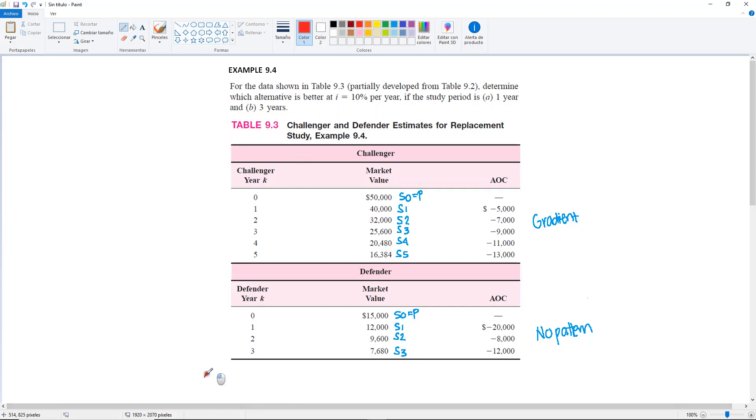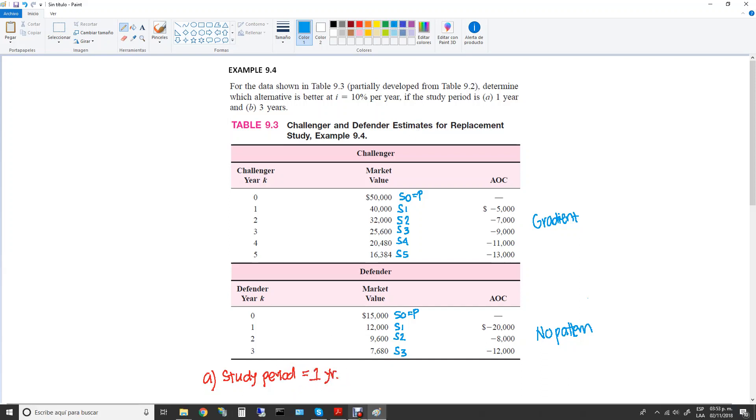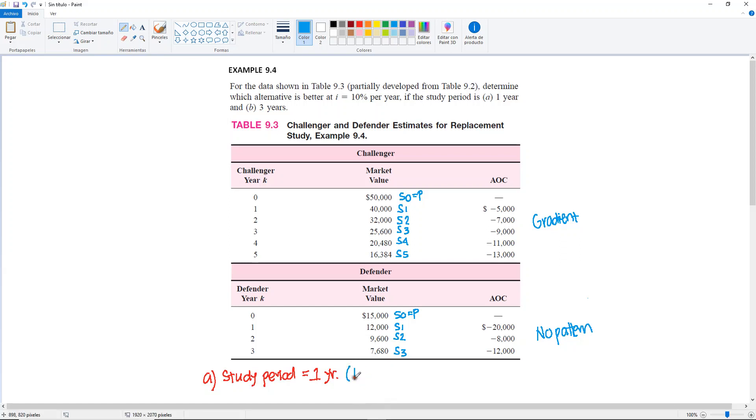So in the problem, it's asking us for Part A to perform the study over a study period of one year. This means that our K, we're only going to do it for K equal 1, or we can also see it this way, that N will be equal to 1.